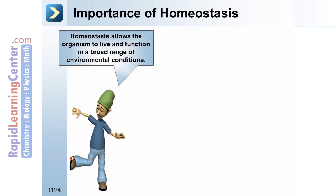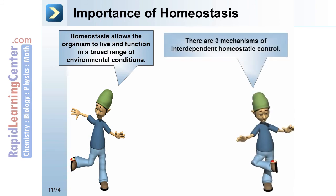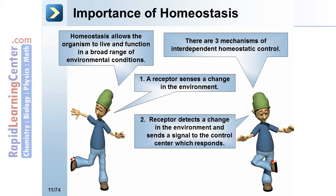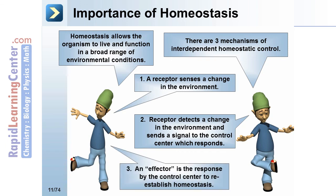Importance of homeostasis: Homeostasis allows the organism to live and function in a broad range of environmental conditions. There are three mechanisms of interdependent homeostatic control. First, a receptor senses a change in the environment. Second, the receptor detects the change and sends a signal to the control center, which responds. Third, an effector is the response by the control center to re-establish homeostasis.